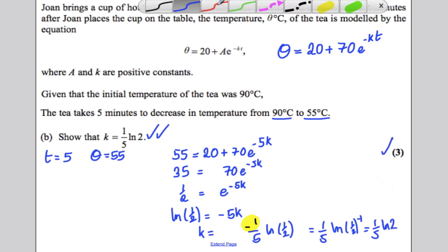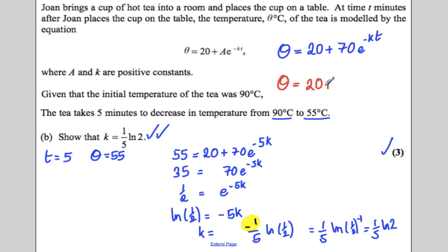So going back to our equation, we can actually write theta. We know that theta is 20 plus 70, and then e to the negative one-fifth ln 2, all of that, times t. So, we've got our A and our K now from the initial work they gave us.